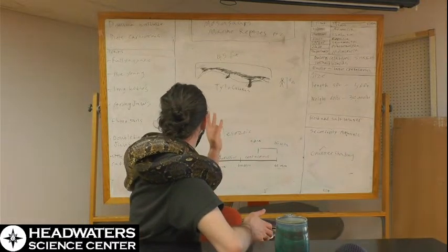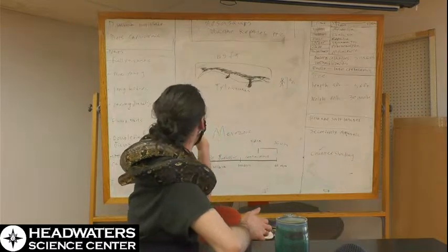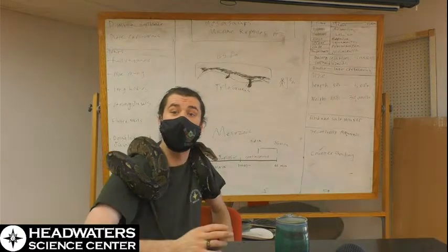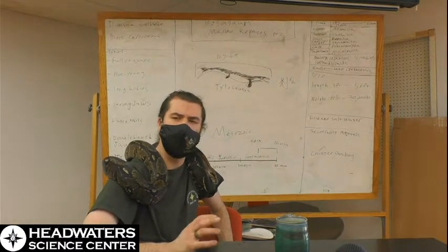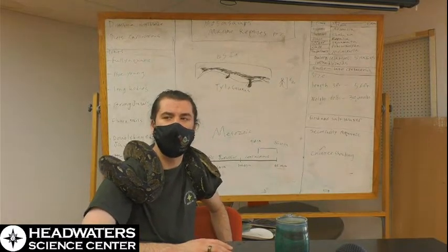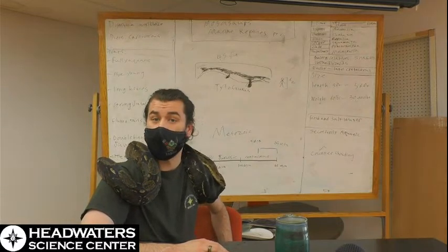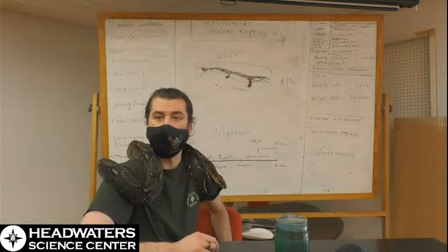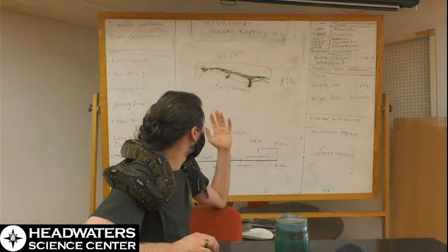They also had these fluked tails. When these animals were initially discovered, they didn't really think they had those. They thought they swam a lot more like marine iguanas or crocodiles. They thought they were a little bit slower than other marine reptiles.